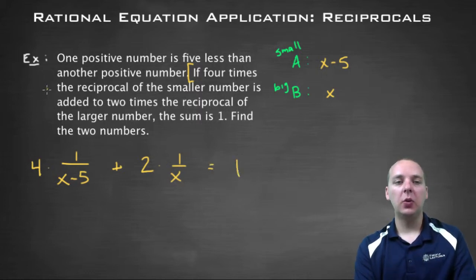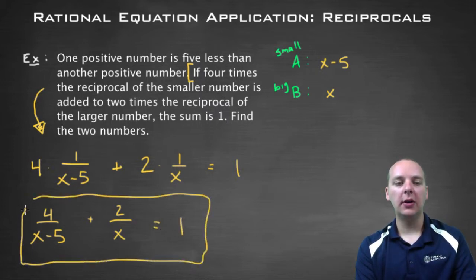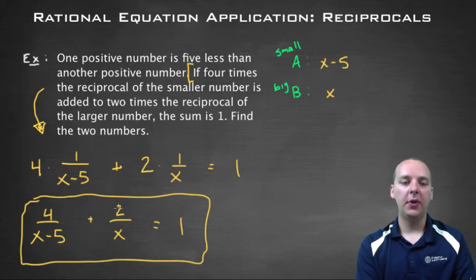So we've done a good job, we've taken the word problem and we've written it as a math equation. So this would be like four over X minus five, if you just put the four up here in the numerator which you're allowed to do, plus two over X equals one. So we're not done, but this is a good start, this is an equation that represents this word problem here.